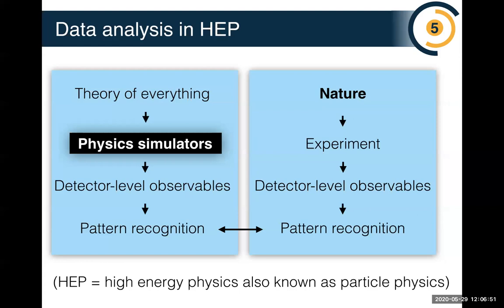In the simulation-based inference mindset, data analysis proceeds on two parallel tracks. On the right we have nature, which we observe through experiments that produce data, and we do some dimensionality reduction. In parallel, from a theory with a small number of parameters we can simulate everything — from sub-nuclear length scales through detector physics — producing the same high-fidelity observables. Comparing the two sides allows us to infer something about the theory from data.